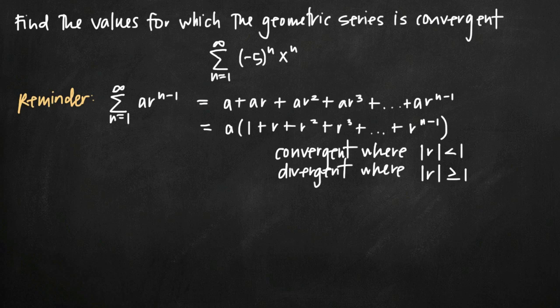Today we're going to be talking about how to find the values for which a geometric series is convergent. In this particular problem, we've been given the infinite sum from n equals 1 to infinity of negative 5 raised to the n power times x raised to the n power.